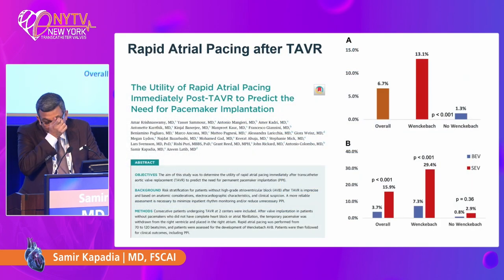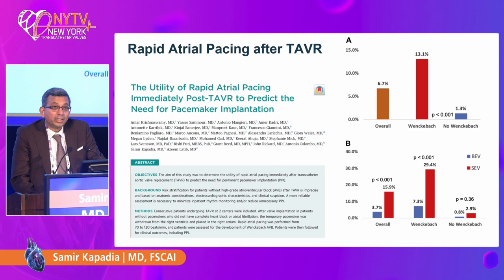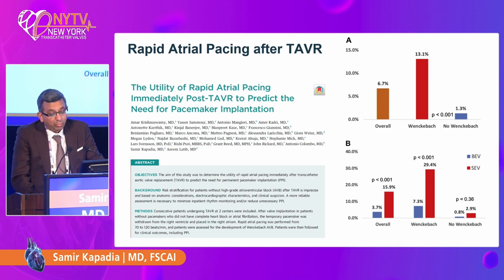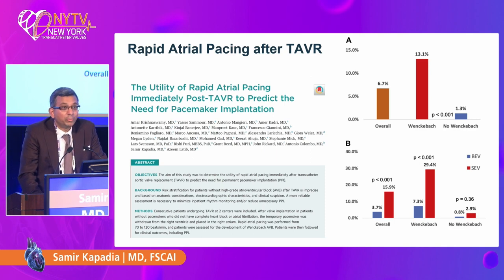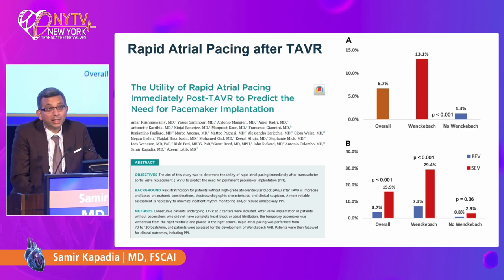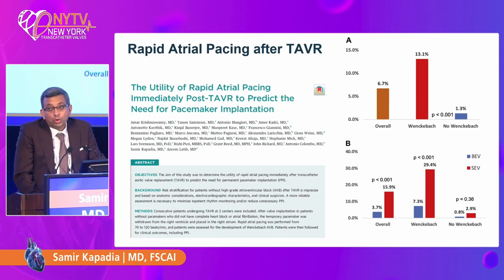We studied rapid atrial pacing in collaboration with Dr. Colombo's group in Italy with Azeem. We pace the patient and then discharge them. There are only two patients who required a pacemaker in the first 30 days if they could conduct one-to-one at 120 beats per minute. If they cannot conduct one-to-one, that does not necessarily mean they have a conduction abnormality — it may be the AV node blocking the conduction. So we need to monitor them or do whatever is needed.